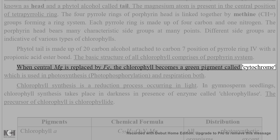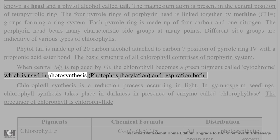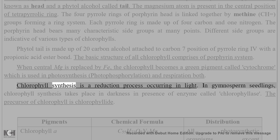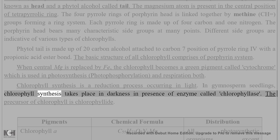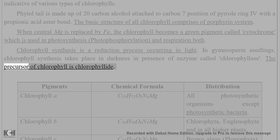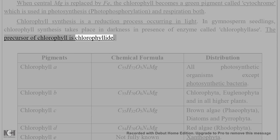The basic structure of all chlorophylls comprises a porphyrin system. When the central magnesium is replaced by iron, the chlorophyll becomes a green pigment called cytochrome, which is used in photosynthesis, photophosphorylation, and respiration. Chlorophyll synthesis is a reduction process occurring in light. In gymnosperm seedlings, chlorophyll synthesis takes place in darkness in the presence of an enzyme called chlorophyllase. The precursor of chlorophyll is chlorophyllide.